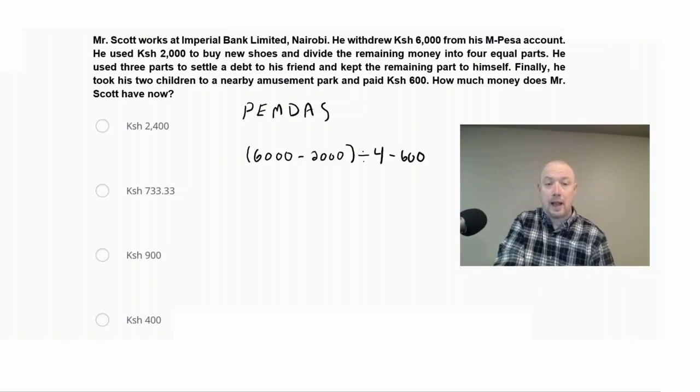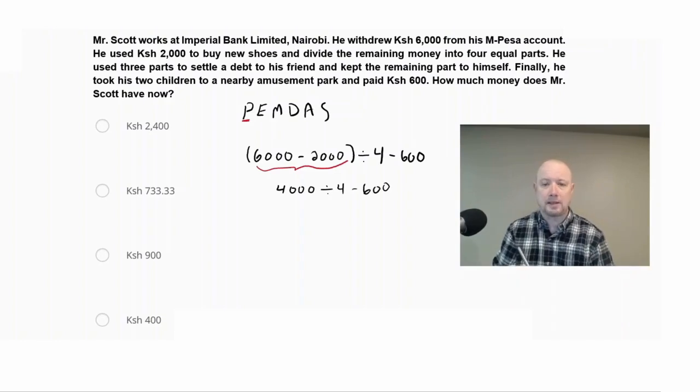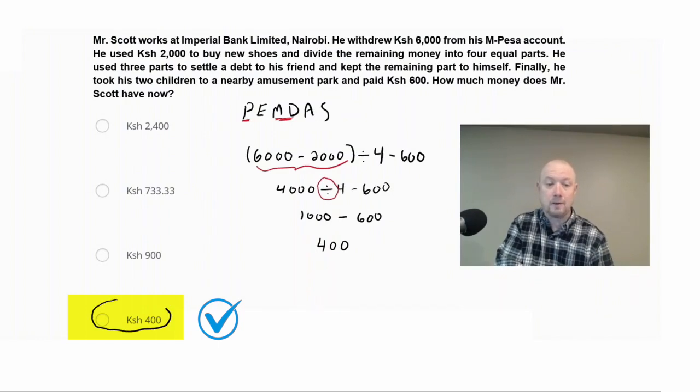So with PEMDAS, we're looking at the first step is P for parentheses or in general grouping symbols. So we're going to do that first. So we're going to go inside the grouping symbol, and we're going to do the operation in there. And we have 6,000 minus 2,000 Kenyan shillings. So this would be 4,000 divided by 4 minus 600. In the next step of PEMDAS is exponents, but there's no exponents here. E is for exponents. Now multiply and divide work together left to right. So we're starting from the left, and we're doing any multiplication or division. So I can see here I have the division symbol. So I'm doing 4,000 divided by 4, which is 1,000. And then I'm going to subtract off my 600. So my final answer would be 400 Kenyan shillings.